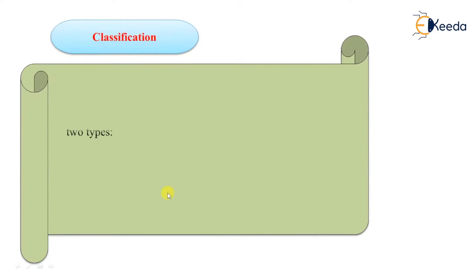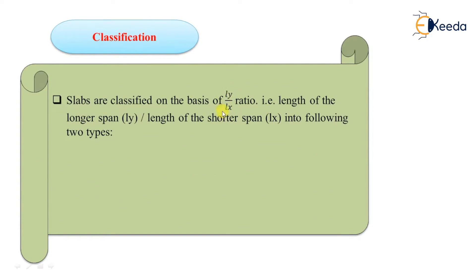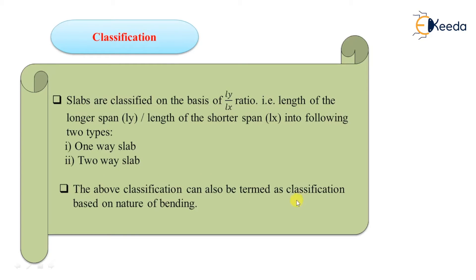Slabs can be classified on the basis of ratio of longer span to the shorter span. Here we took Ly as the length of longer span and Lx as the length of shorter span. According to the ratio of Ly by Lx, there are two types of slabs. Number 1 is one way slab and number 2 is two way slab. This classification is also called as classification based on nature of bending.